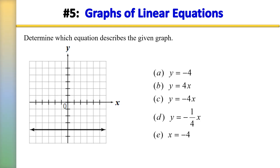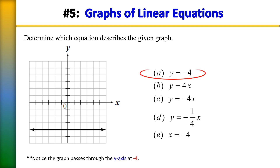Number 5: determine which equation describes the given graph. The correct answer is choice A. The graph of y equals negative 4 is a horizontal line parallel to the x-axis that passes through the y-axis at negative 4.